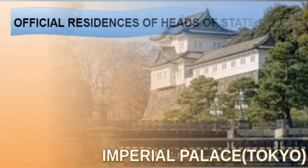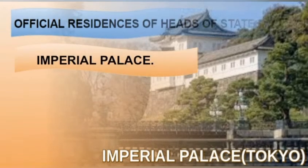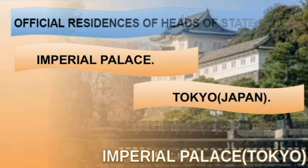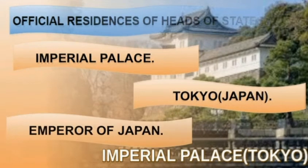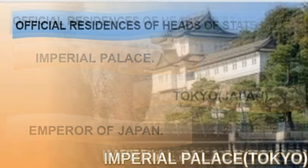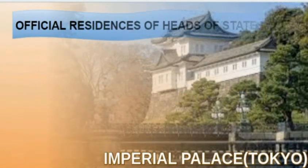Coming to the next one, Imperial Palace, situated in Tokyo, Japan. The Imperial Palace is the official residence of the Emperor of Japan.